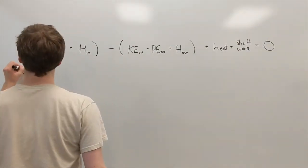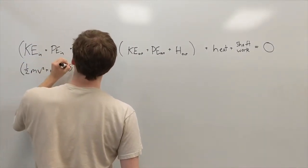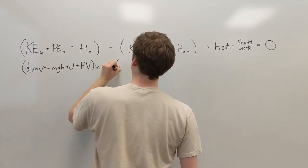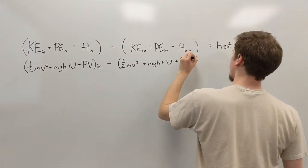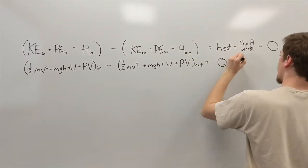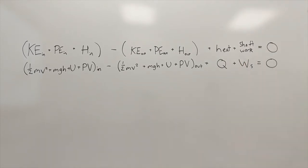So now we've put everything together. The energy balance is a simple way of keeping track of where the energy is going in a system. Since we know that energy is conserved, the overall balance must equal zero. Notice that we see in this equation all the terms we've been talking about. The nice thing about this equation is that it frees us from needing to know how the energy transforms. Instead, we only need to measure the initial and final states of the system, as well as how much heat or shaft work enters the system.